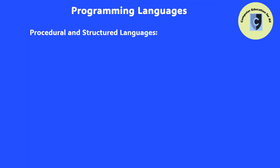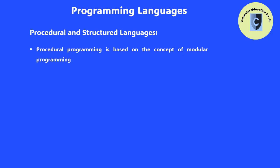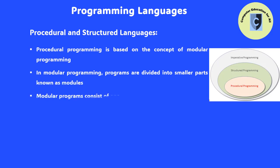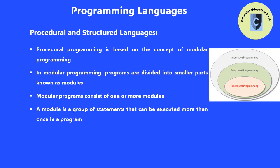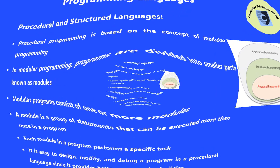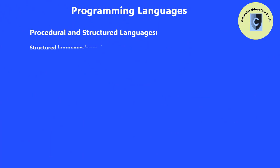Procedural programming is based upon the concept of modular programming. In modular programming, programs are divided into smaller parts known as modules. Modular programs consist of one or more modules. A module is a group of statements that can be executed more than once in a program. Each module in a program performs a specific task. It is easy to design, modify, and debug a program in a procedural language since it provides better programming facilities. Structured languages consist of three fundamental elements: sequence, selection, and repetition.